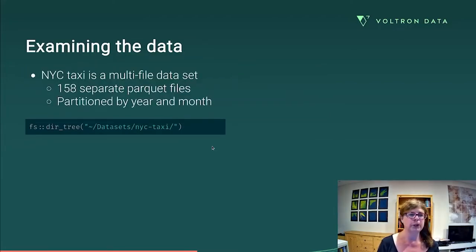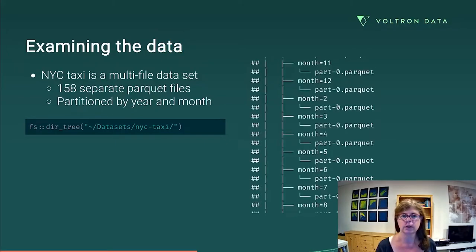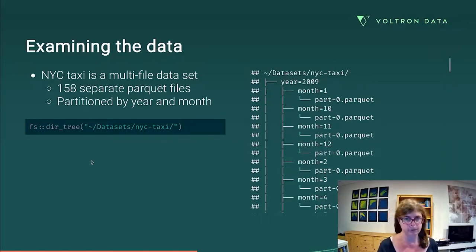Once you have all the data, we should have a look at what it is. It's not one 69 gigabyte file, that would be a disaster. What it in fact is, is 158 separate parquet files. And what it does is split up this one table separately so that there's one month of data in each file. So we have it partitioned by year and by month. So I'm using the directory function from the fs package to have a quick look at what this directory structure looks like. So year equals 2019, month equals one. And then there's a part zero dot parquet file in there. So that's the directory structure we're working with.